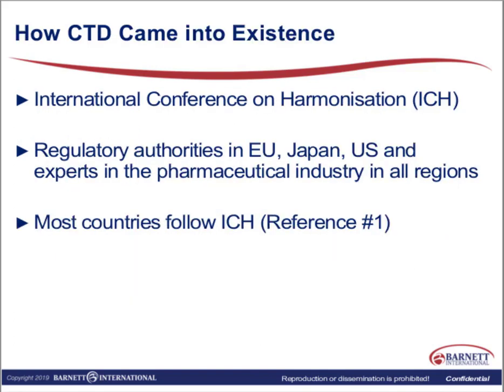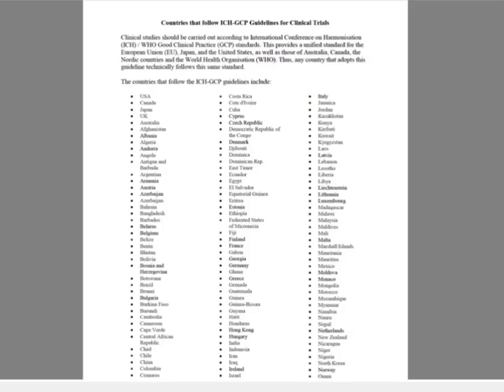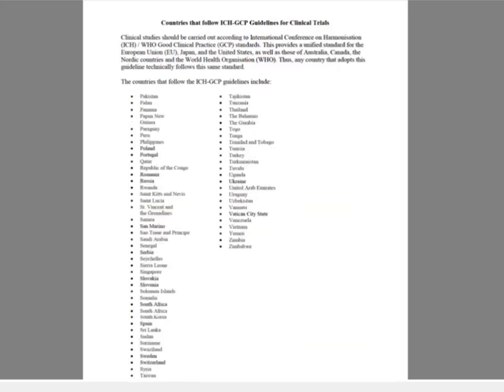The CTD came into existence from the ICH, an organization developed in 1990. It is composed of regulatory authorities from the EU, Japan, and the U.S., along with experts in the pharmaceutical industry in all regions. At this point, most countries actually follow ICH. Reference one that was provided shows a list of countries that follow ICH GCP guidelines — a huge list of countries — so this has really been adopted as the standard in the drug development process.